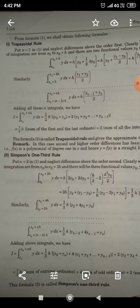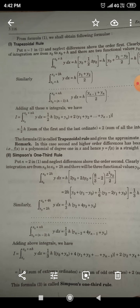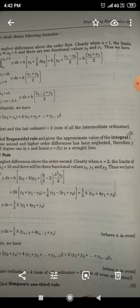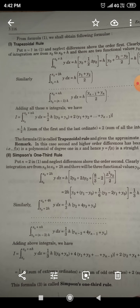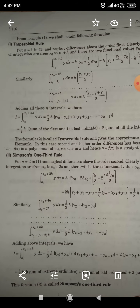The formula 2 is called the trapezoidal rule and gives the approximate value of the integral. In this case, second and higher order differences has been neglected. Therefore, Y that is F(x) is a polynomial of degree 1 in X and hence, Y equals F(x) is a straight line.